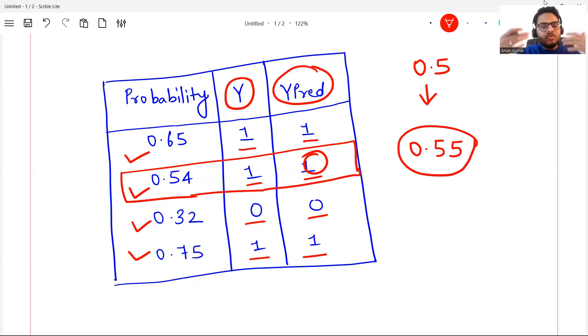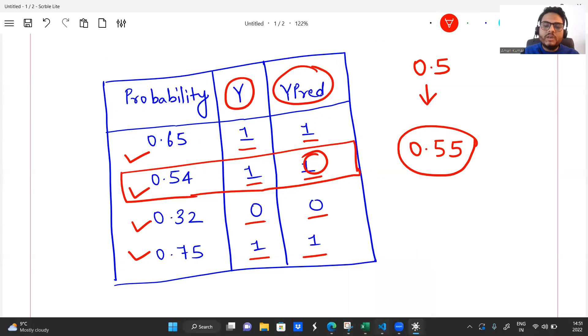To find a solution for this, we need a number that can tell me how good is my model through the range of thresholds. It is a threshold independent measure of assessing your model, or finding how good your model is. Let me quickly show you in Python what I mean by that.